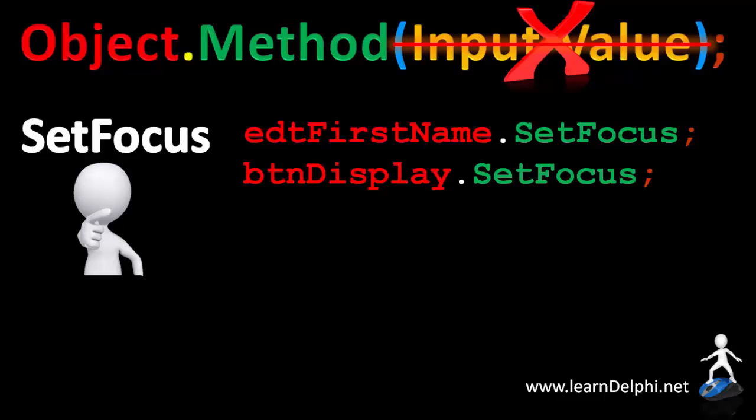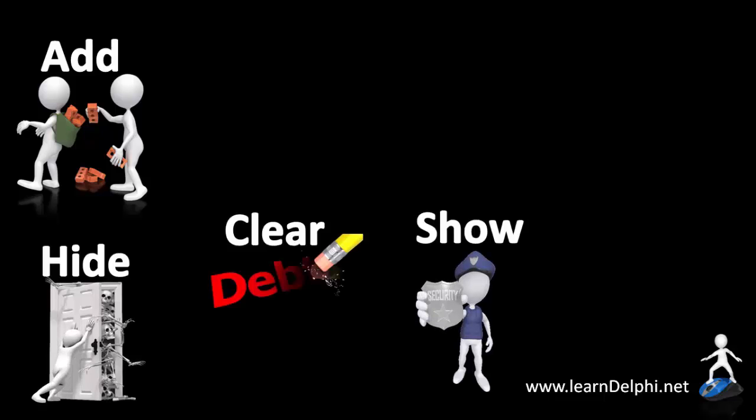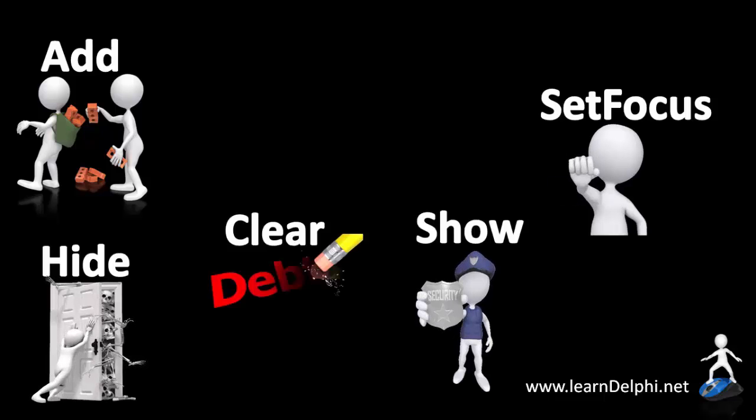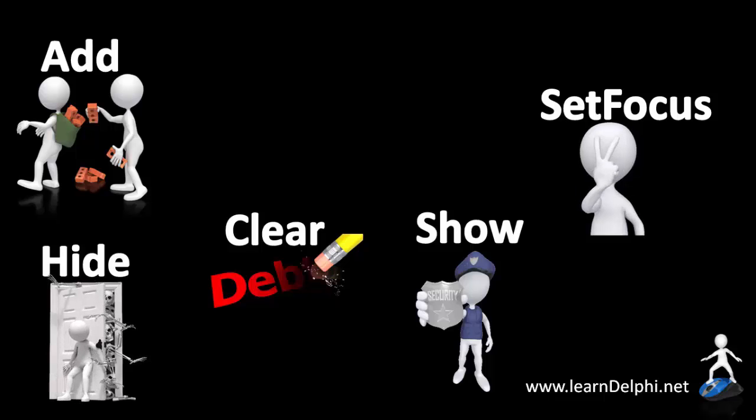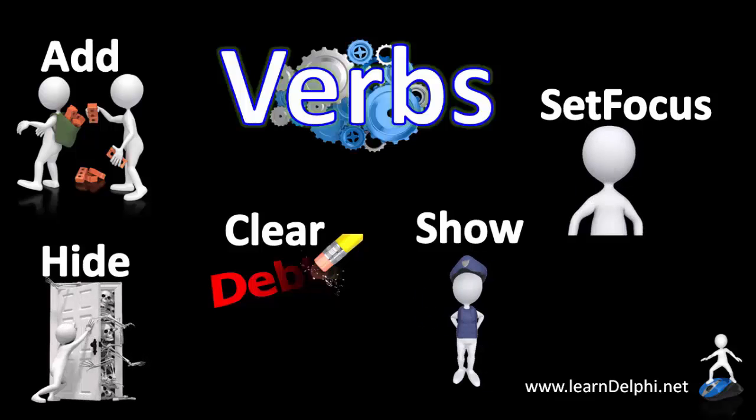These are just some of the methods available for Delphi objects. If we look at the names of the methods like add, clear, show, hide, set focus, we can hear that the names refer to tasks that are performed. And therefore they are all verbs.